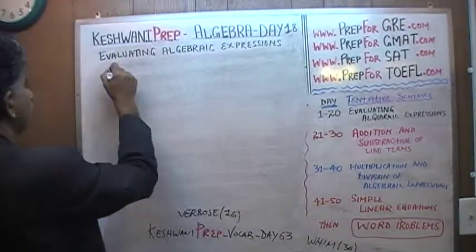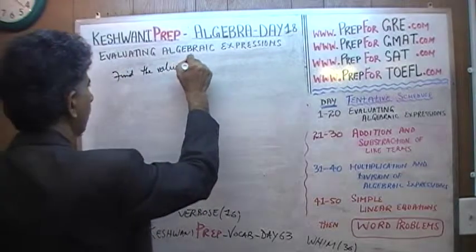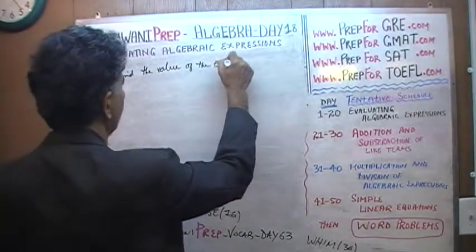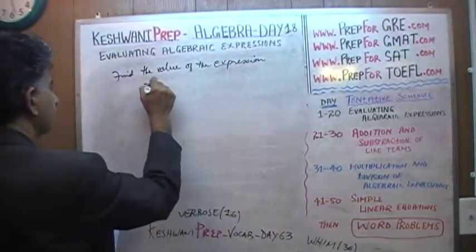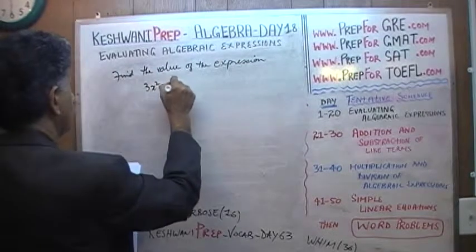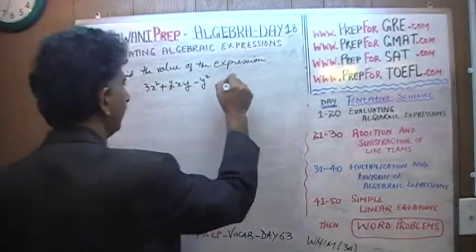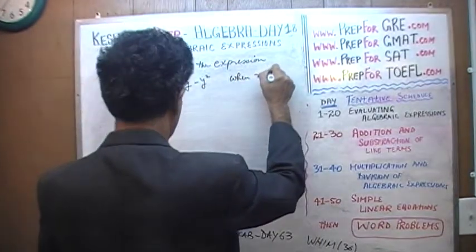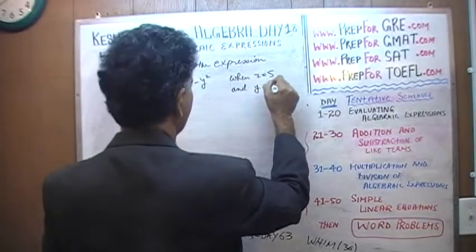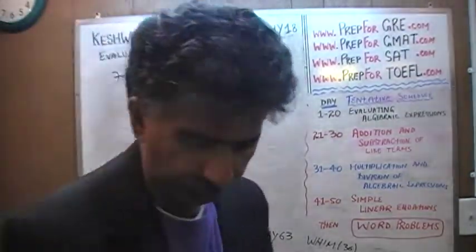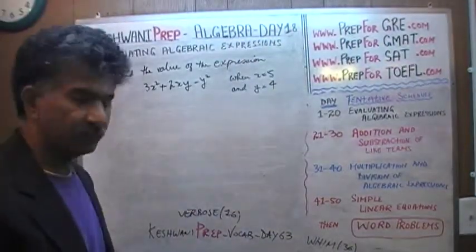It says: find the value of the expression 3x squared plus 2x times y minus y squared, when x equals 5 and y equals 4. Very simple, very straightforward. We have to find the value of this expression when x equals 5 and y equals 4.